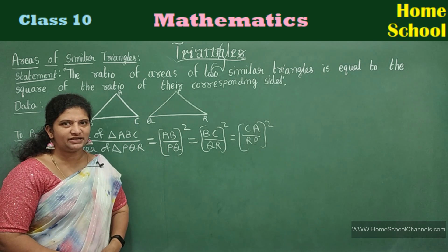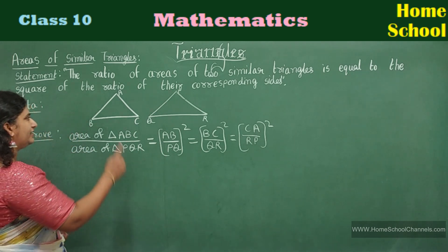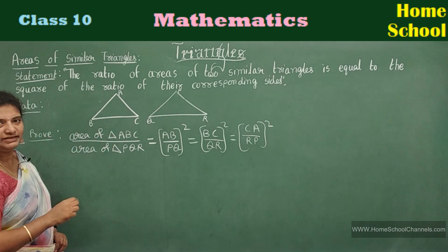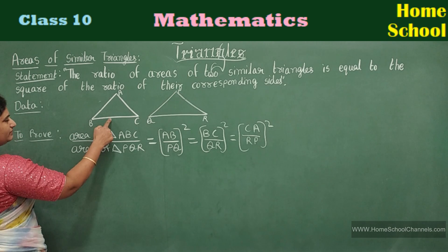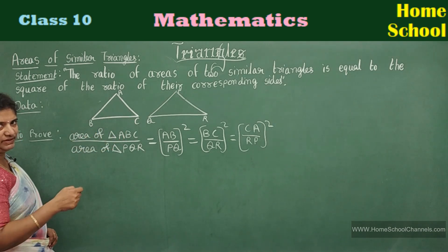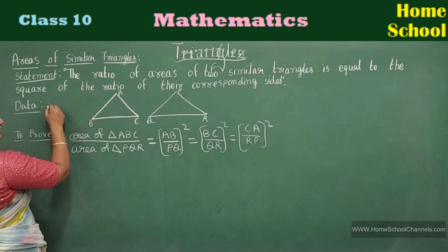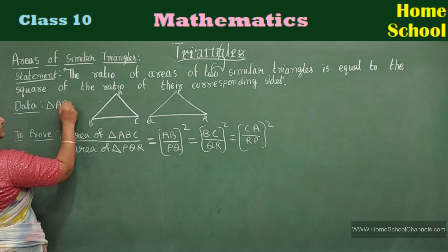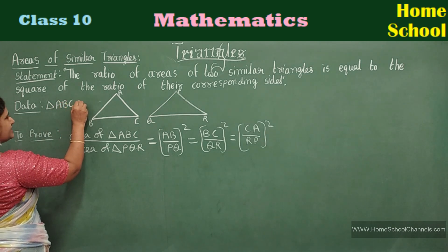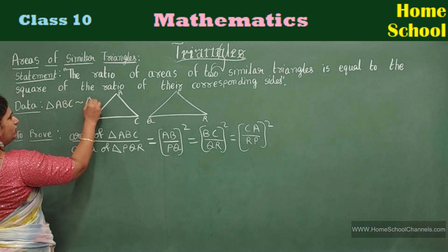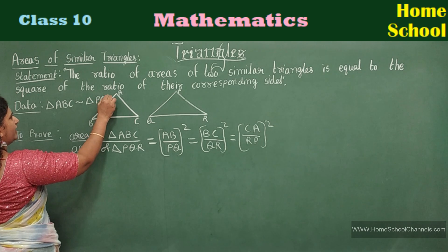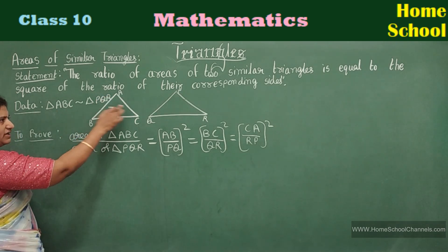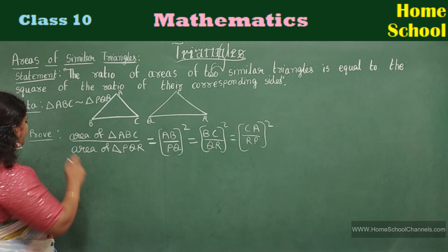This is about your statement. The two triangles are ABC and PQR. Data — given: the two triangles are similar. Given: triangle ABC similar to triangle PQR. To prove: area of triangle ABC by area of triangle PQR is equal to the square of the ratios of all three corresponding sides.